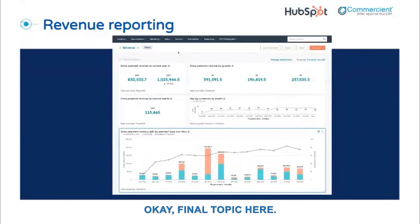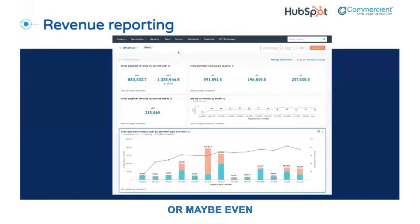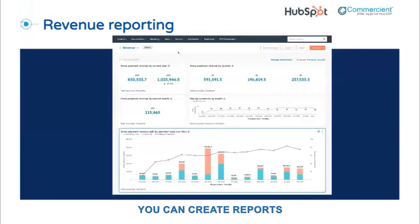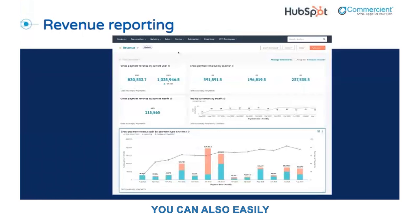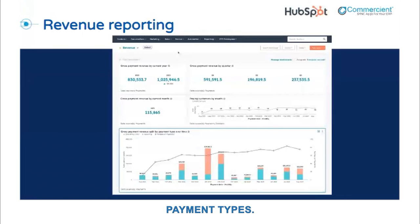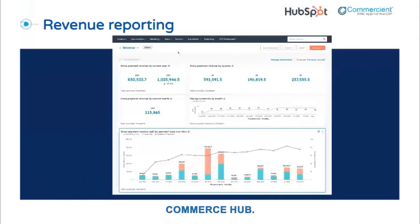Now that you have invoices, you're accepting payments, and depending on your business and product, maybe some or all of those payments are subscriptions. Now you get to leverage HubSpot to make that data truly meaningful. You can create reports and dashboards to monitor your revenue and forecast upcoming payments. You can also easily track past-due payments, look for trends of non-payment, and even look at smaller things like preferred payment types. The sky's the limit — you open up the world to centralized revenue reporting when you're using Commerce Hub.